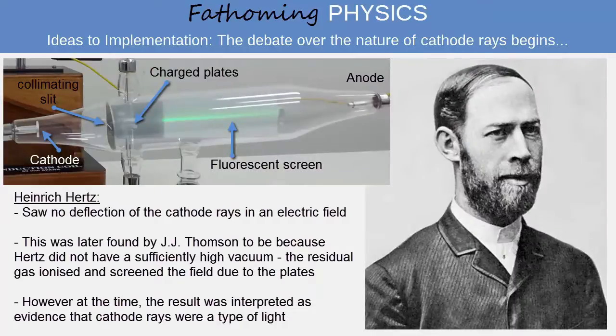Heinrich Hertz, who we shall meet in more detail in the next part of Ideas to Implementation, was another German physicist who believed that cathode rays were some type of disturbance in the ether. He performed experiments which looked for the deflection of cathode rays passing between charged electrical plates. But he saw no deflection, and he interpreted his result as further evidence that the rays were not composed of charged particles.